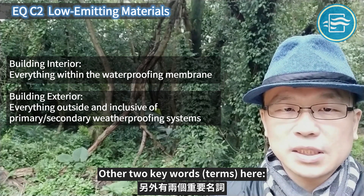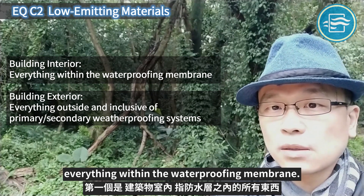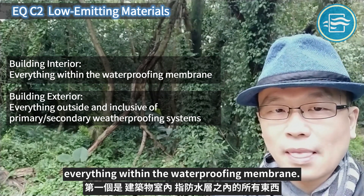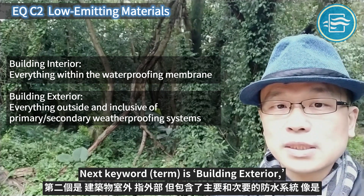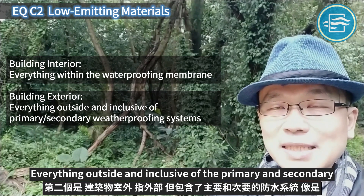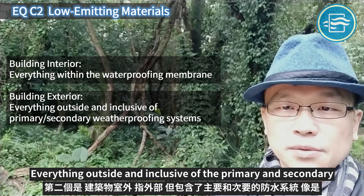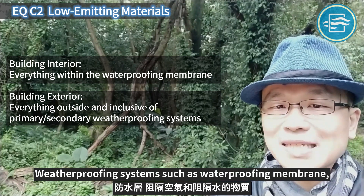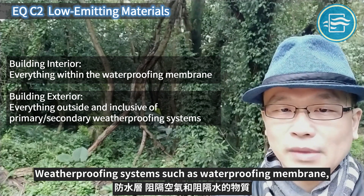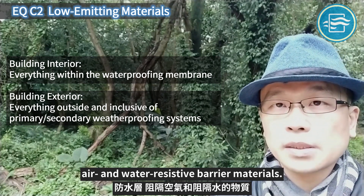Two other keywords here. First one: Building Interior — it means everything within the water-proofing membrane. Next keyword is Building Exterior — everything outside and inclusive of the primary and secondary weather-proofing systems, such as the water-proofing membrane, air and water-resistive barrier materials.